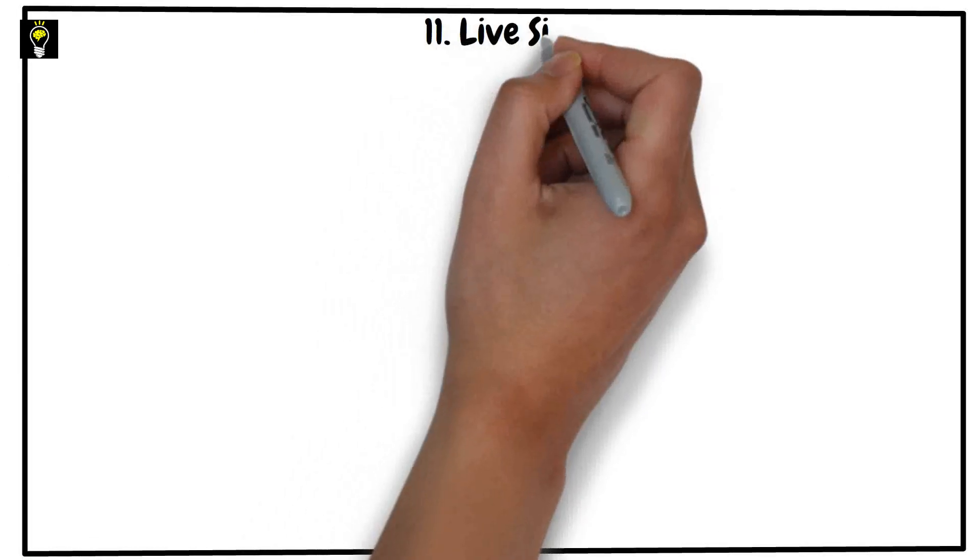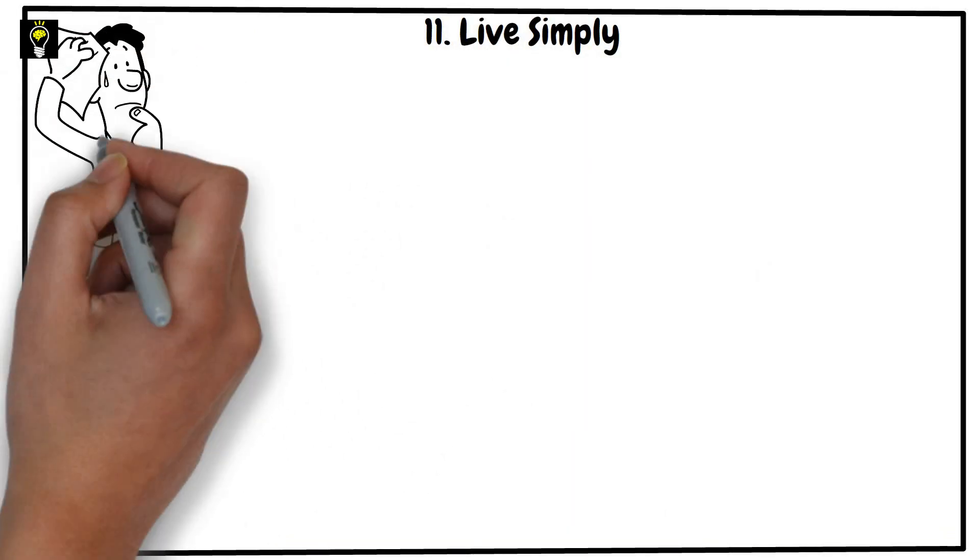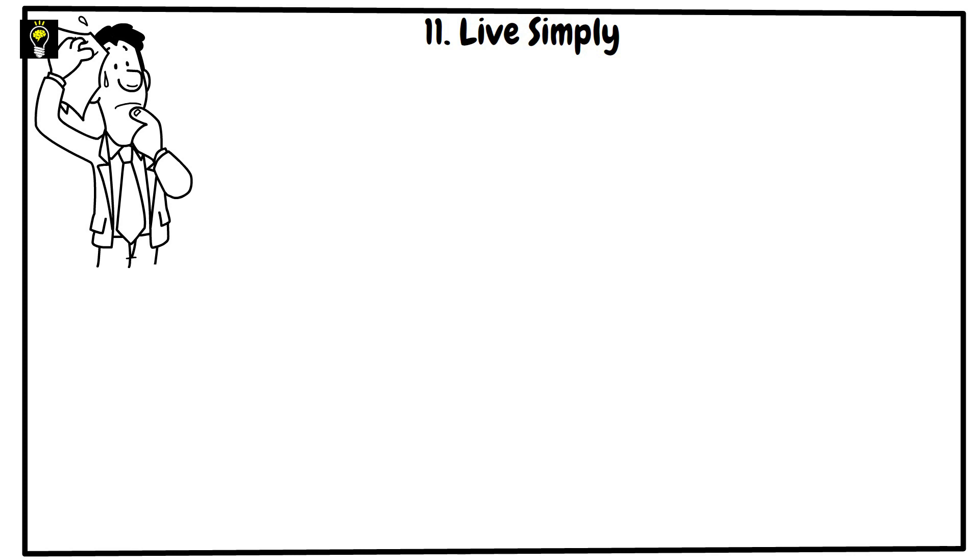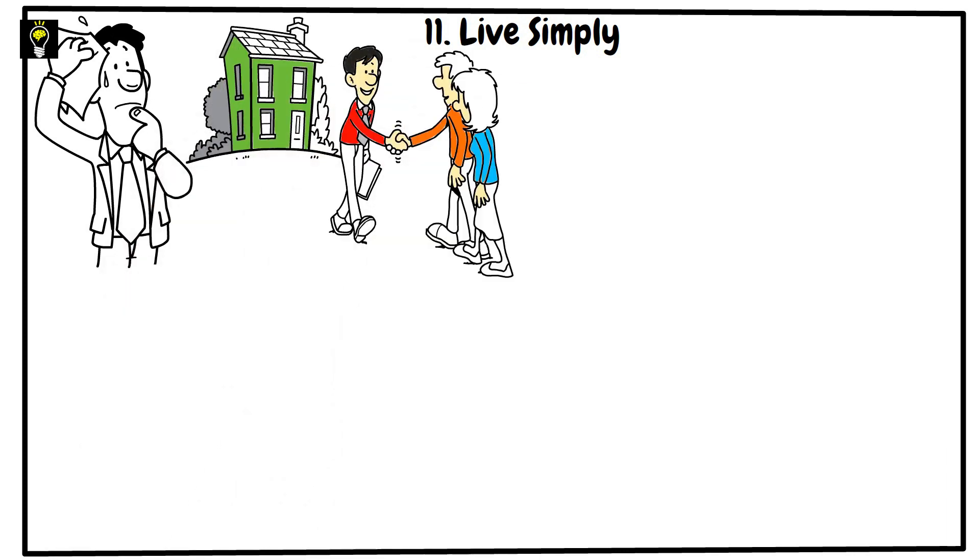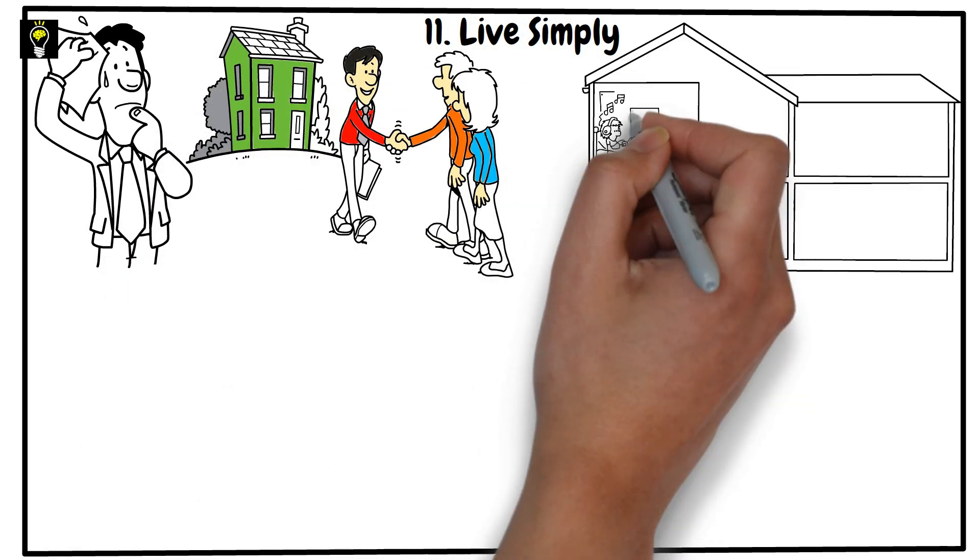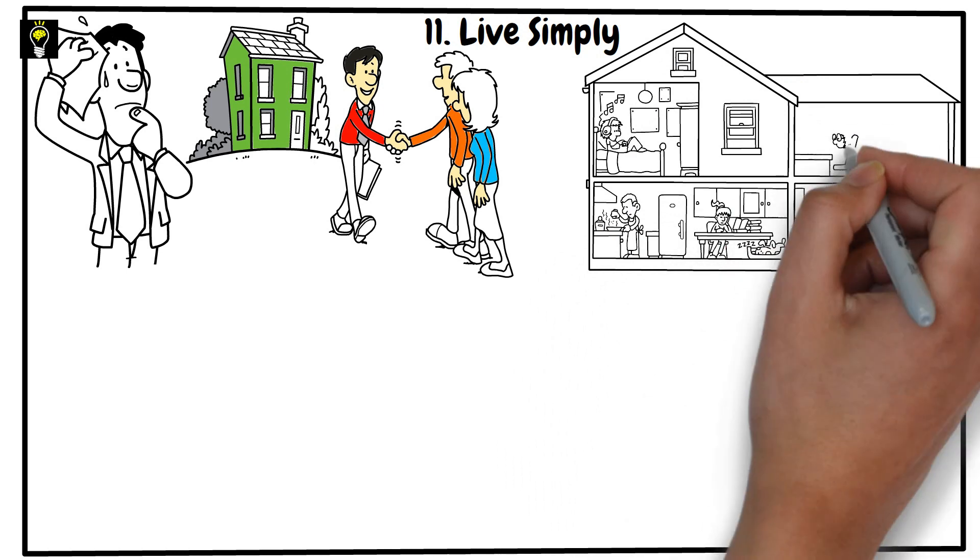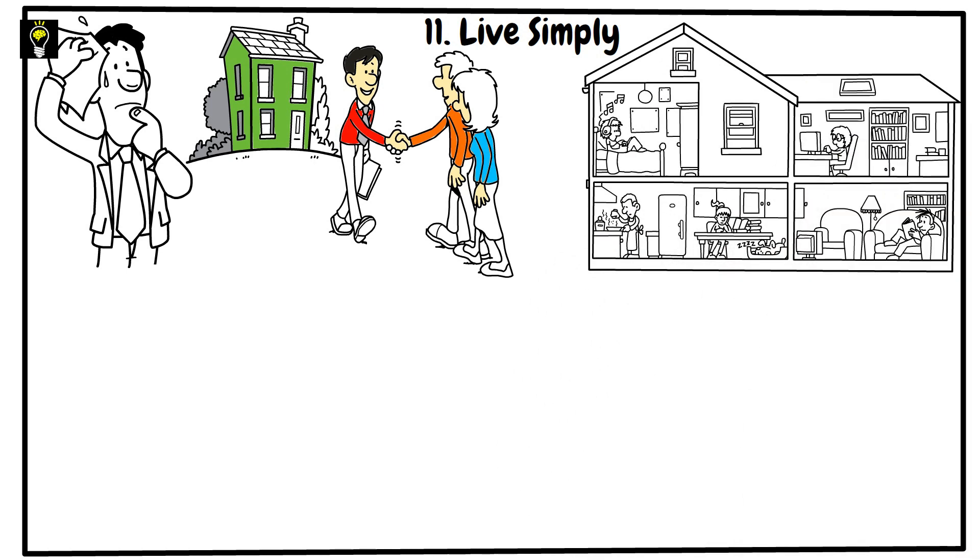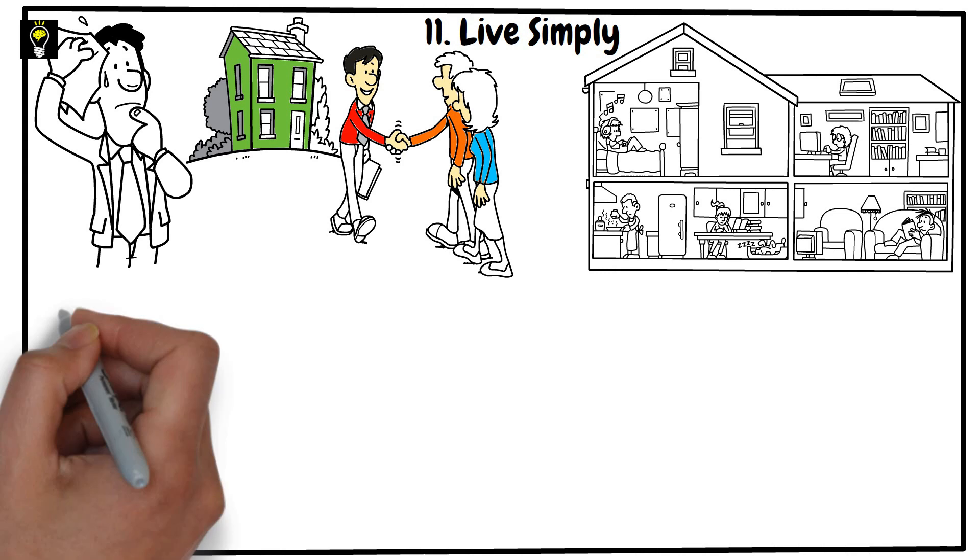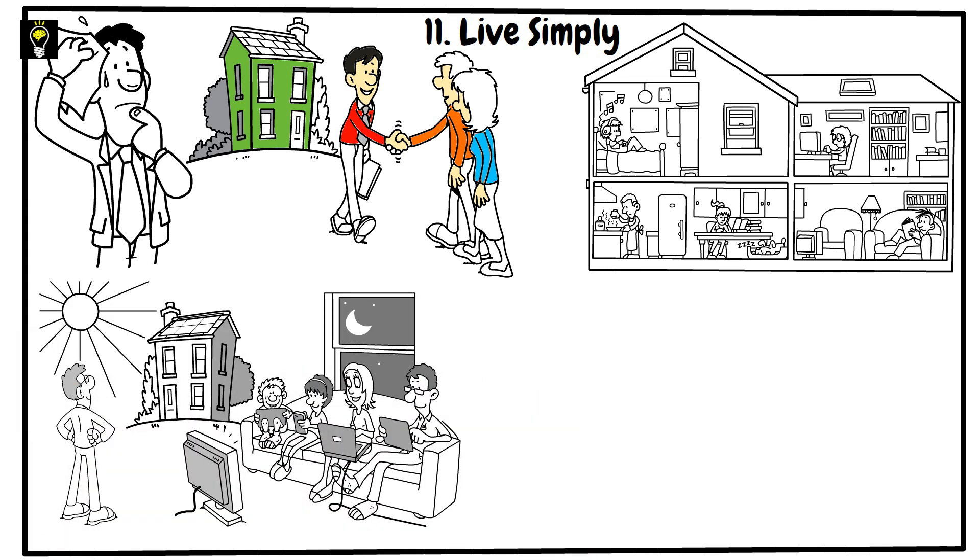Live simply. We all know that life can be pretty complicated sometimes. One way to do it is to live more simply. This doesn't mean giving up all your possessions and moving to a remote cabin in the woods, but it does mean decluttering your life and getting rid of anything that isn't absolutely essential.